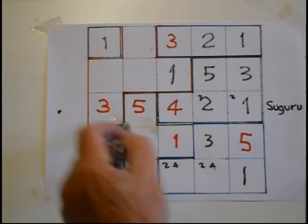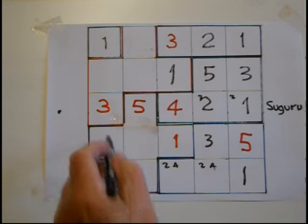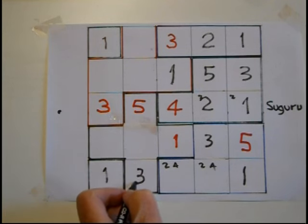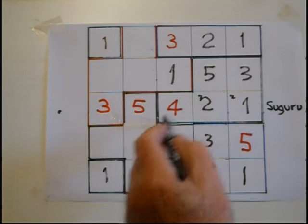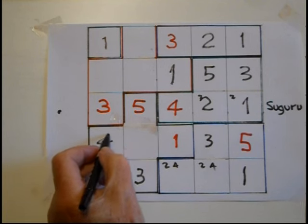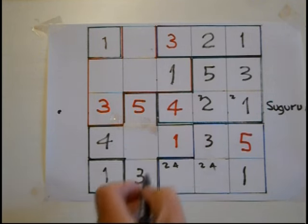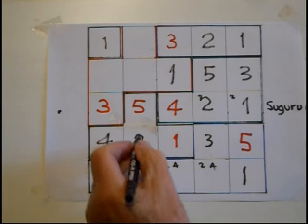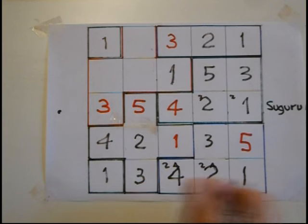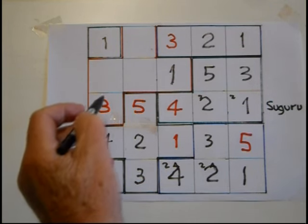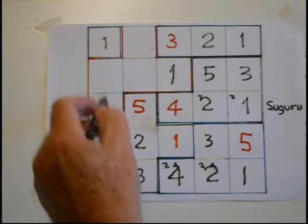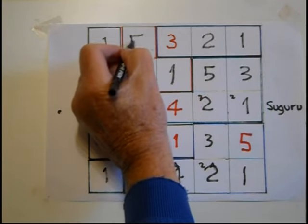Three can't be here or here in this block so 3 can only go there. Four can't be there diagonally in this block, so 4 is the only place it can go there. One and 2 are missing; 2 can't be there so that must be 4, which makes that 2. We need a 5 which can't be there or there in this block, so that's got to be 5 up there.